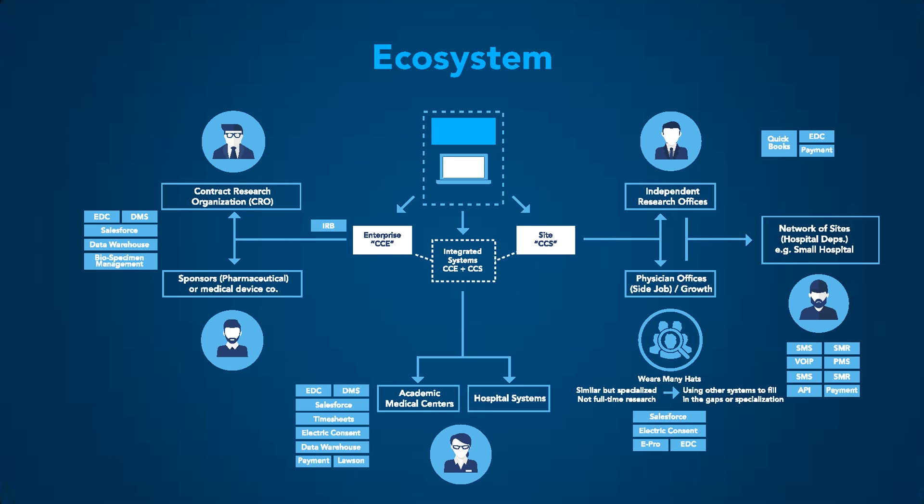An ecosystem really is a combination of just a few key elements and their connections, and you can see them in this diagram. This particular ecosystem — almost doesn't matter what particular domain it is — they always have these characteristics.